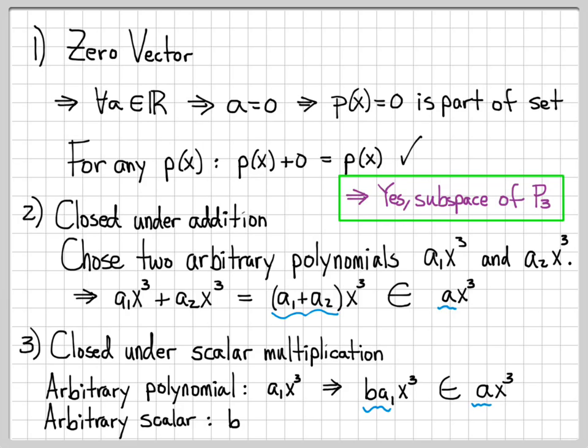Having satisfied all three properties — containing the zero vector, closure under addition, and closure under scalar multiplication — we know that the set of polynomials of the form Ax³ is indeed a subspace of P3.